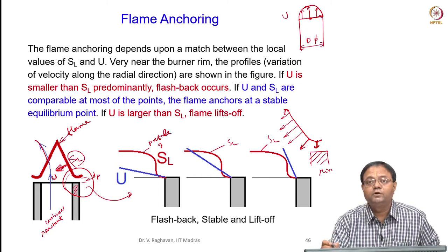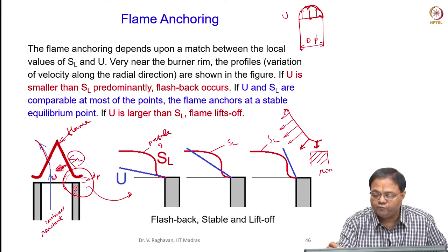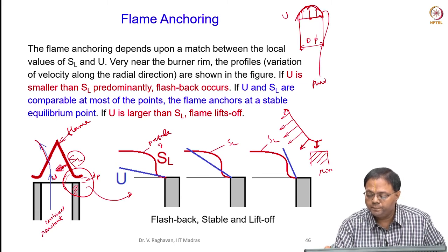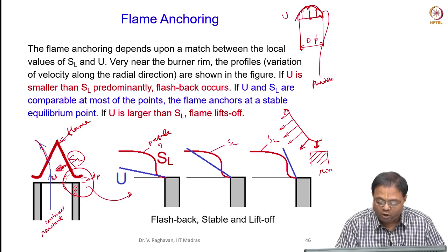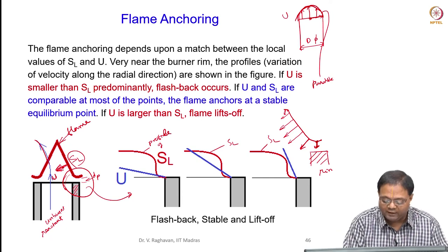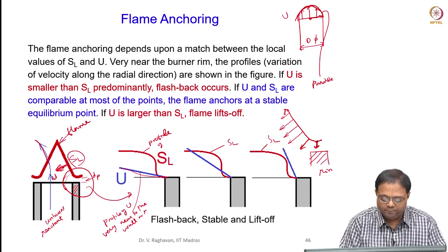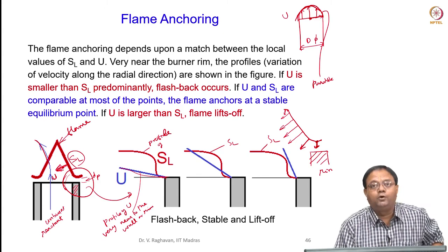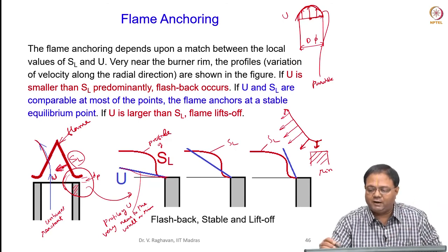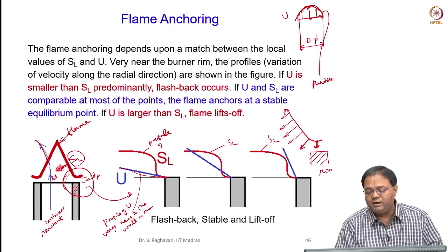Near the burner rim, when I go very near to the wall, this parabolic profile can be approximated as a linear profile. This line represents the profile of U very near to the wall or rim. U goes to zero at the wall and increases, with maximum value at the center. Near the burner rim, we can assume linear variation.